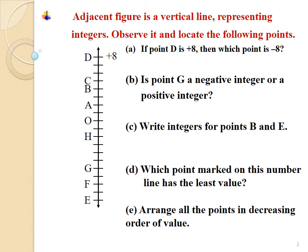In this question, we have been given a vertical number line. On this vertical number line, we have been given points like D, C, B, A, O, H, G, F, and E representing the integer 8. We have been given only one integer which is 8, marked as point D.